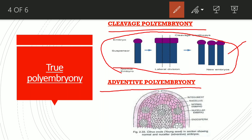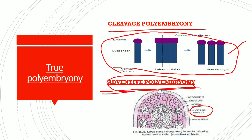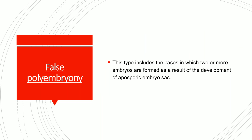The second sub-type is adventive polyembryony, where embryos arise from the tissue lying outside the embryo sac, also known as nucellular embryo or nucellular polyembryony.